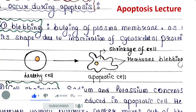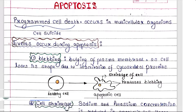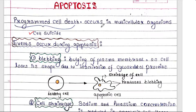Apoptosis means programmed cell death — it is also called cell suicide. We call it programmed cell death because the cell death in apoptosis is totally regulated, totally pre-programmed; it does not occur randomly. Apoptosis occurs in multicellular organisms.